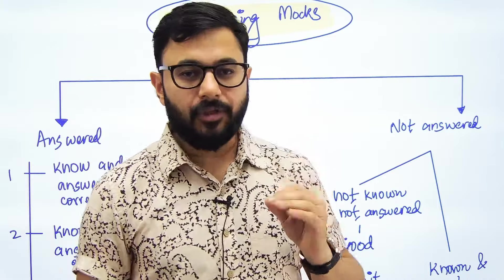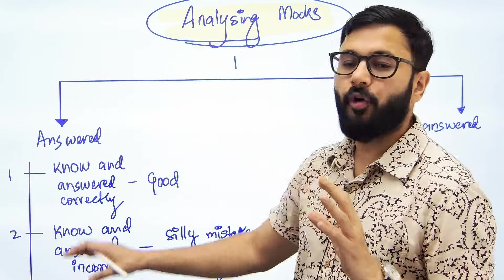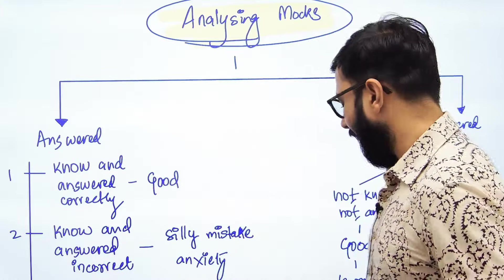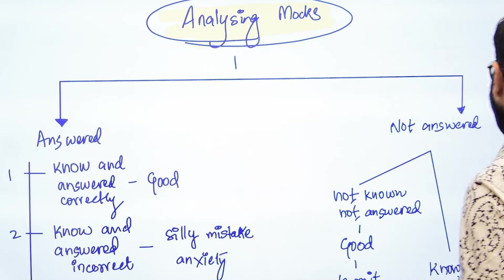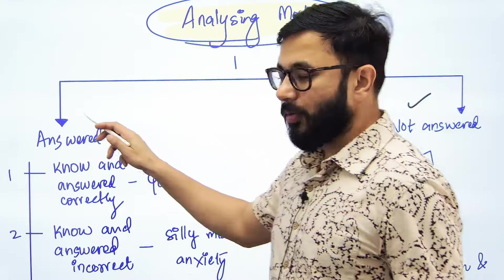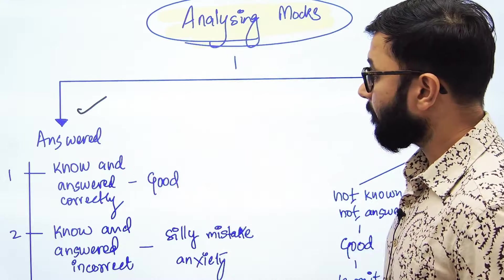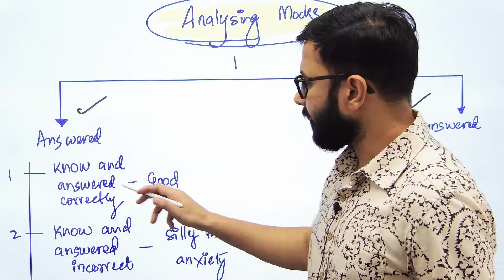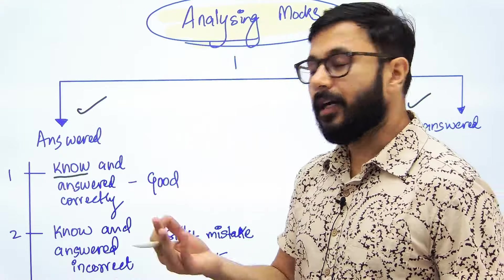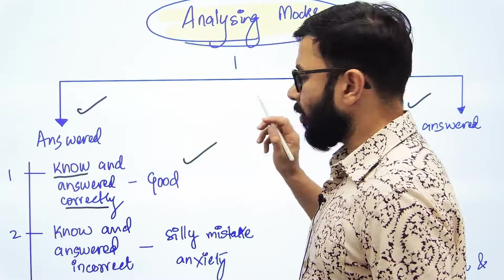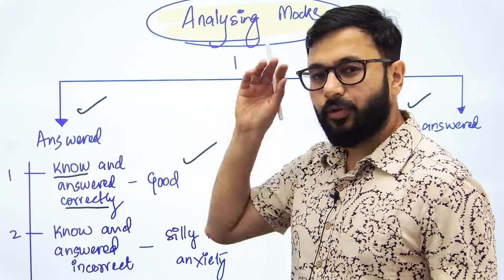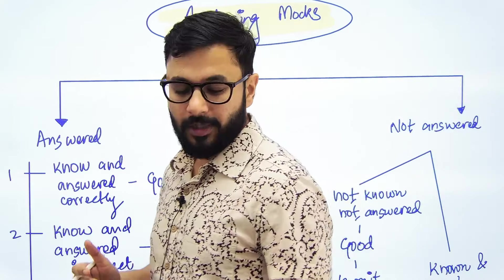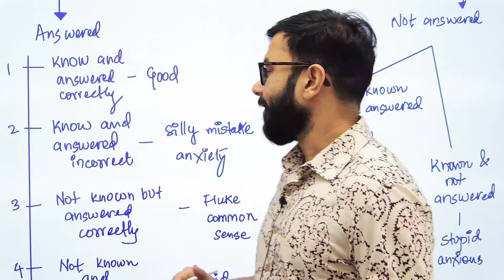There are six divisions into which every question can be put. Every question can form a part of any of these six parameters. Once you attempt a question, you either answer that question or you don't — you don't do anything else. If you answer that question, there are four conditions or situations. The first is: you know the question and the answer, and you answer it correctly. If the question you are analyzing lies in this category, you give yourself a pat on the back and move ahead. You should be doing this more often.